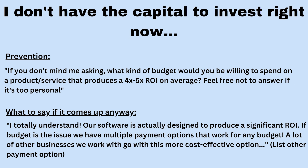Our third objection is: I don't have the capital to invest right now. This is a big one that you can prevent at the beginning of the call by truly understanding the business and knowing what their budget is. You can say: if you don't mind me asking, what kind of budget would you be willing to spend on a product or service that produces a four to five X ROI on average? And then say: feel free to not answer if it's too personal. When you say that, it'll actually get them to open up and share their budget. Most people will say that if they can get a four to five X return on investment, they'd be willing to spend quite a bit, so this prevents the objection from coming up later.